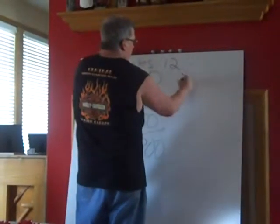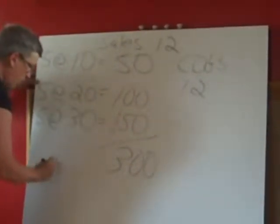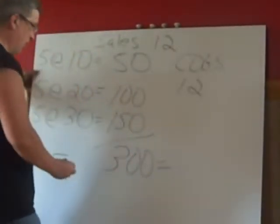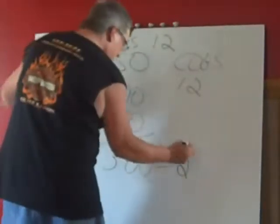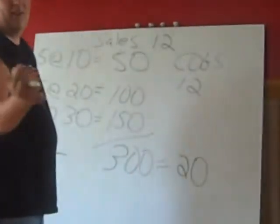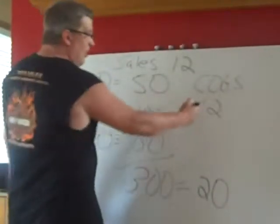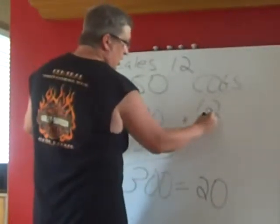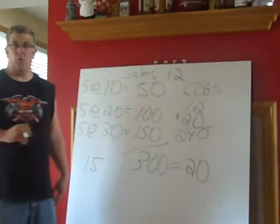For our cost of goods sold, we're going to take our sales of 12 units sold, and multiply that by our average cost. Our total costs were $300 over 15 items, so our cost per unit is equal to $20 a piece. We sold 12 of them, so we take 12 times $20, and that gives us our cost of goods sold of $240.